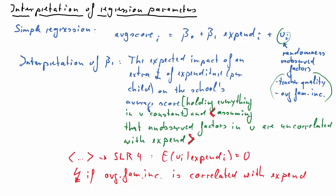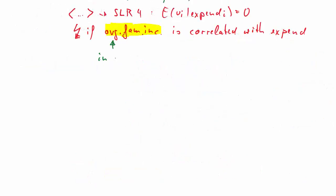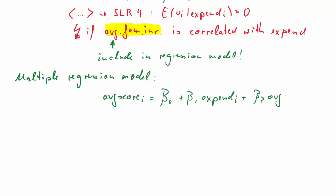The question for the applied econometrician then arises of what we should do in this case where we have something in the error term that's likely to be correlated with the explanatory variable. Well, if you can, if you have observation for that variable here, average family income, you should really include it into your regression model. So the regression model would then look like before, but then as an additional explanatory variable, the average family income. We have a new error term Vi because that is not the same anymore as the Ui from the simple regression model.